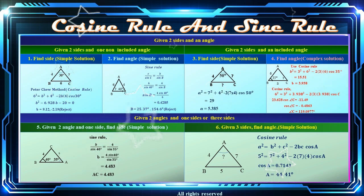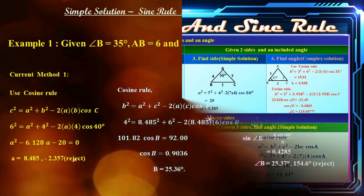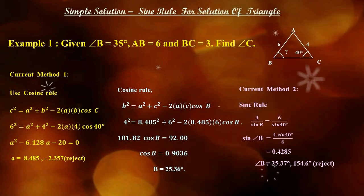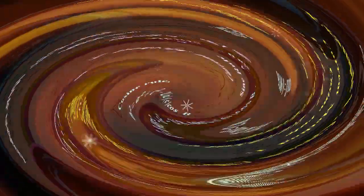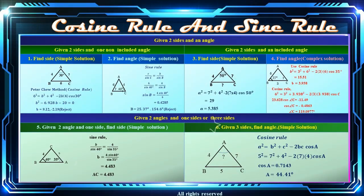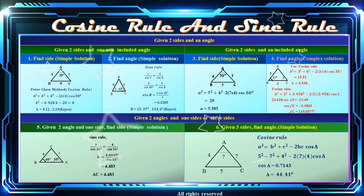The sine rule is simple knowledge. As shown in example 1, the sine rule can solve triangle problems of type 2, simply compared to the cosine rule. As shown in the figure, there is still one type of triangle problem — type 4 — which cannot be solved simply by either the cosine rule or the sine rule.